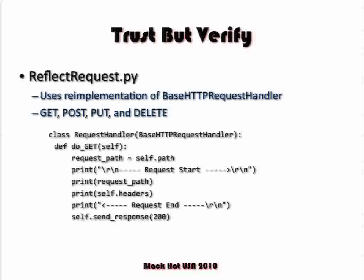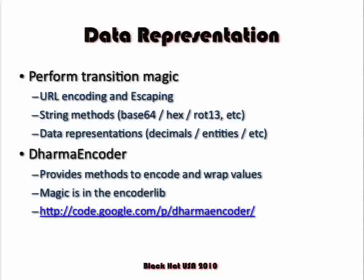Anyone who's done web testing knows about encoding and data representations — sometimes browsers like IE understand different encoded formats versus Firefox. Python has string methods just like any other object-oriented language. Every string in Python is an object, and you can call dot-encode on it — base64, hex, even rot13. Just two months ago we were doing an assessment on an application that was obfuscating URL paths using rot13, which was painfully obvious because you'd see a colon and forward slashes followed by a bunch of weird characters.